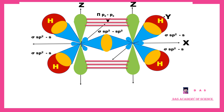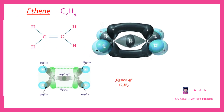Between the two carbon atoms, there are 2 bonds: one sigma SP2-SP2 bond and one pi Pz-Pz bond, forming a double bond. There are also 4 sigma SP2-S bonds with the hydrogen atoms. So ethene has a double bond between carbon and carbon, with 4 hydrogen atoms bonded to the 2 carbons. The molecular formula of ethene is C2H4, that is CH2=CH2.